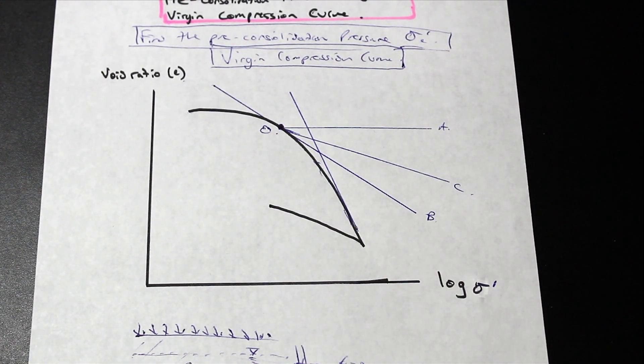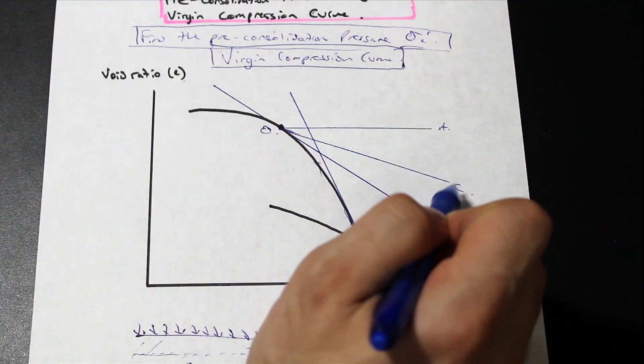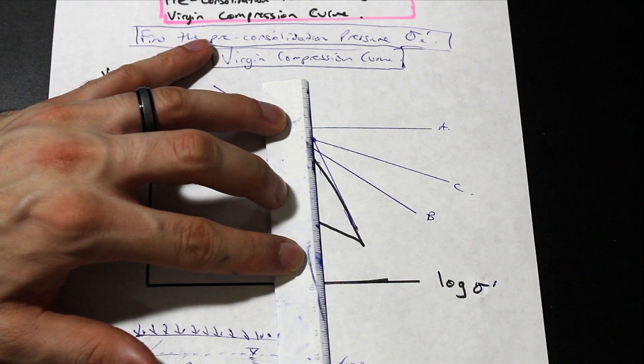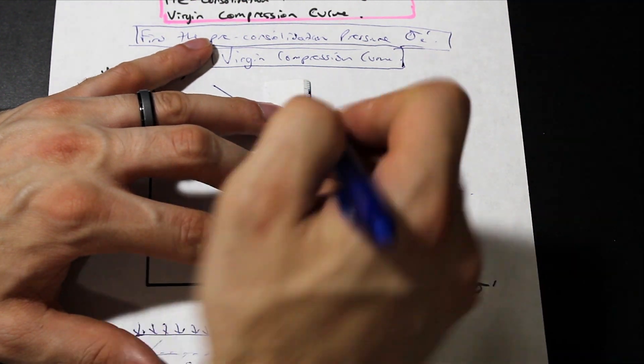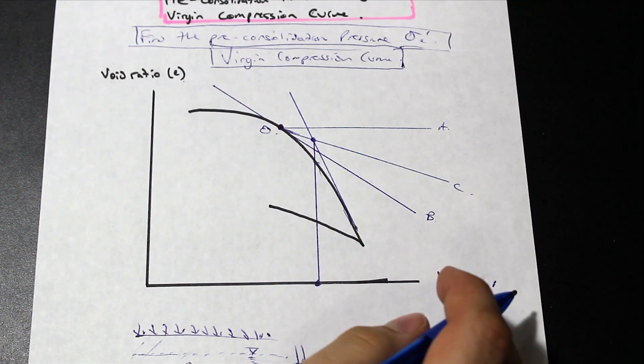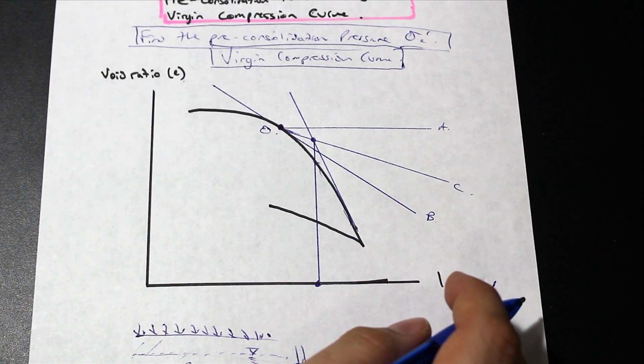And where we extend that line. And where it intersects line OC. We drop a line down to the log effective stress axis. And where that intersects the x-axis.